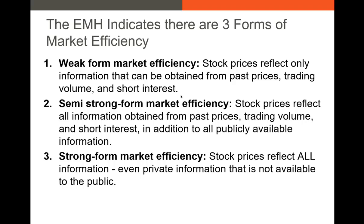Basically any return data that's available should be priced in. Next we have the semi-strong form, which says that any publicly available information should be priced in — for example, the price-to-book ratio or the volume of cars that Ford sold last year should be priced into the value of Ford stock. The final form is the strong form, which says that all public and private information is reflected in a firm's stock price. So if the CEO or some worker on the line knows some information, they will bid up or bid down the price of the stock until it reflects all available private information.